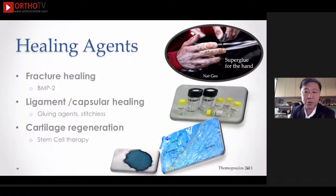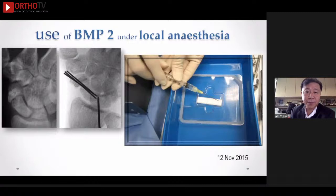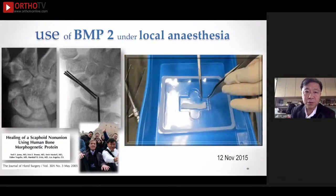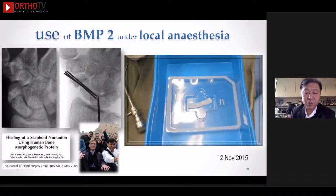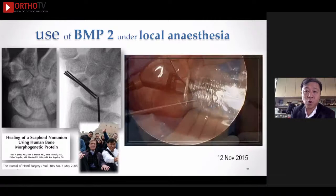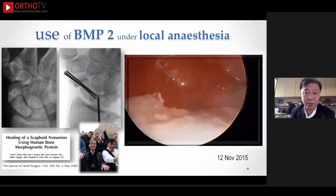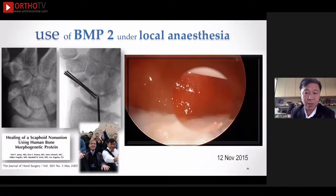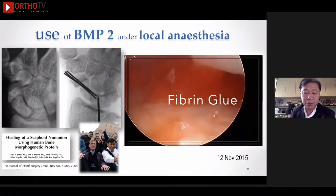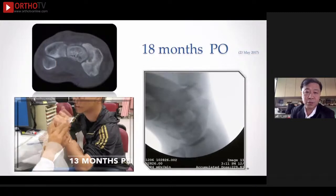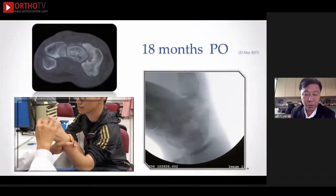Healing agents also help. You can use artificial agents like BMP-2 to aid healing, and stem cells can also help. BMP-2 was first promoted by Dr. Nell Jones in 2005. Using the BMP-2 concept in an arthroscopic manner, you can even avoid using autogenous bone grafting. By doing this, you can completely perform the surgery totally under local anesthesia, under direct vision, and fill up the space with BMP-2 with adequate fixation. The patient can heal very quickly with excellent clinical function. Dr. Toshi Nakamura will share more experience about BMP-2 in the subsequent talk.